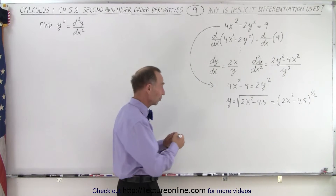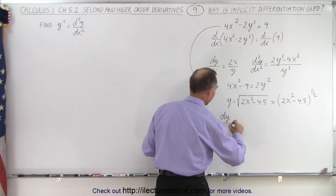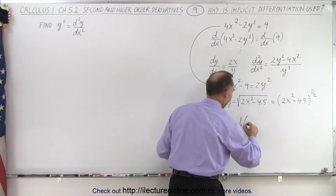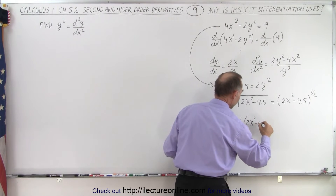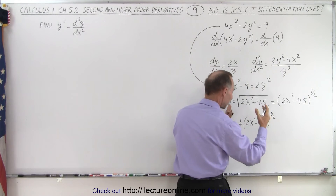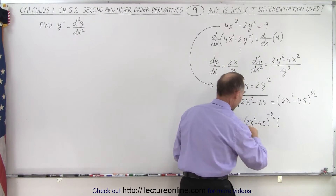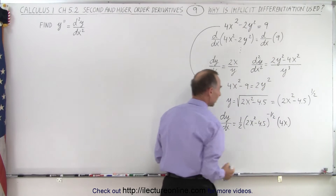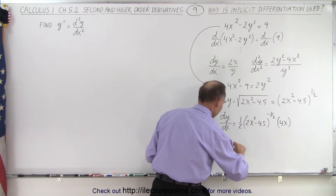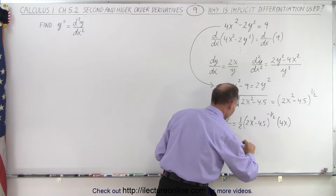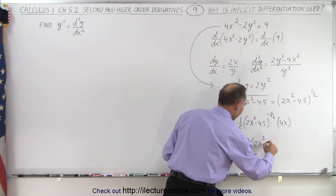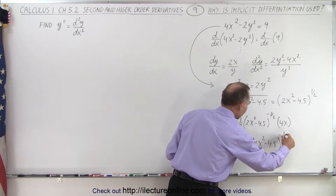So let's now take the first derivative of this. We end up with dy/dx equal to: take the exponent, which is one-half, times 2x squared minus 4.5 to the minus one-half power — as we subtract one from the exponent — times the derivative of what's inside, and the derivative of what's inside would be 4x. Simplifying that, we end up with dy/dx equal to 2x times the quantity 2x squared minus 4.5 to the minus one-half power.